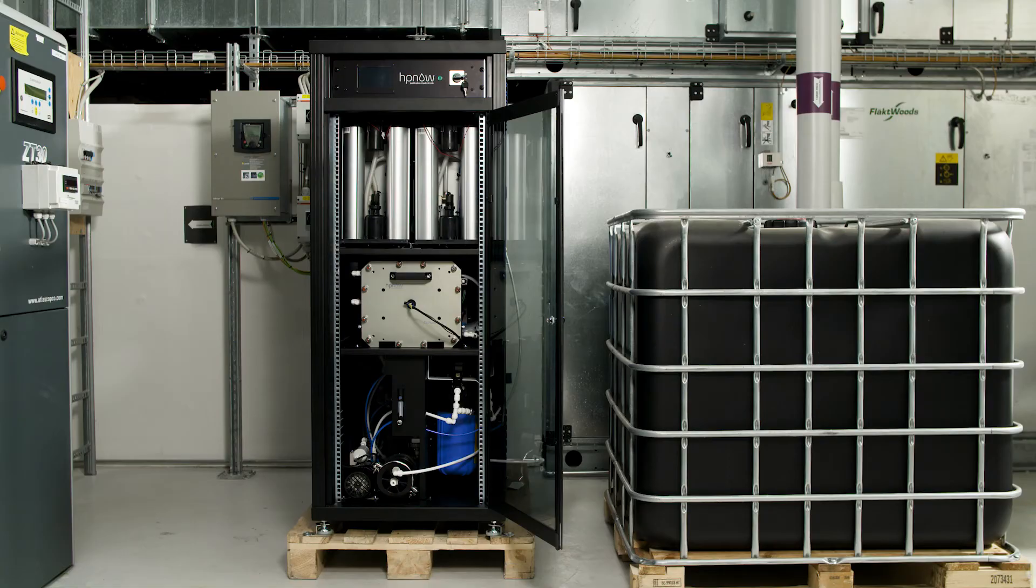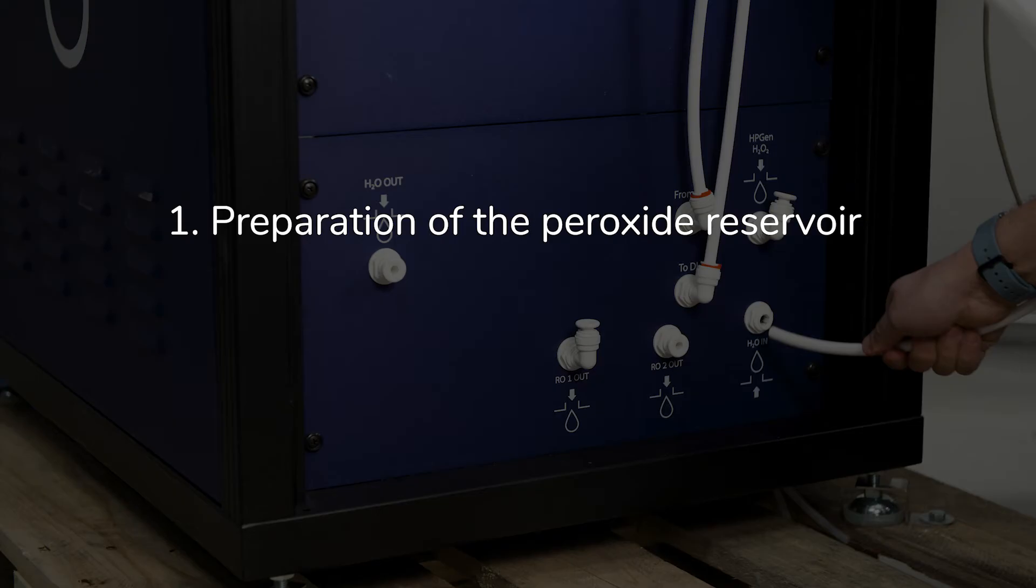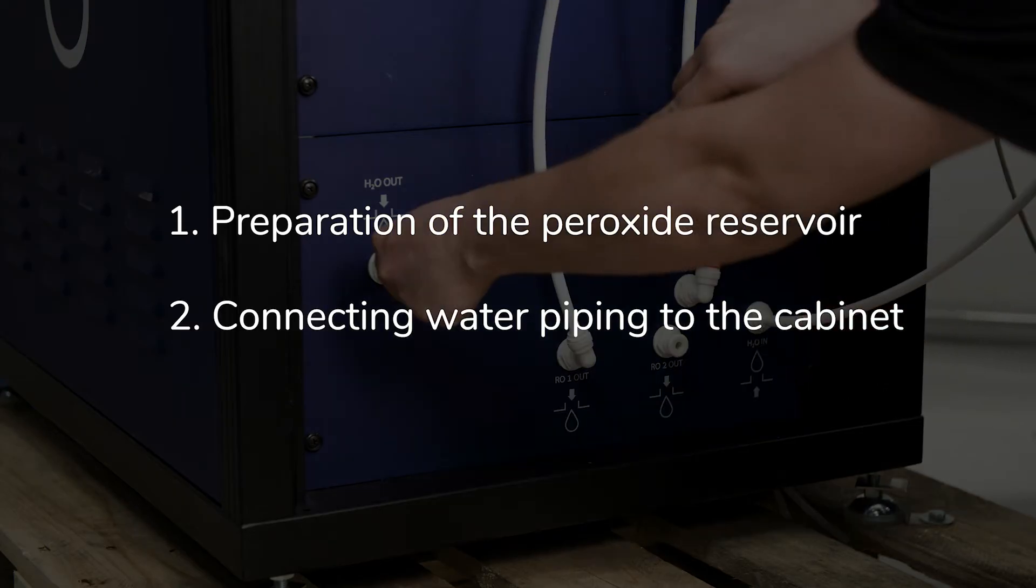Overall, there are two simple tasks in the installation of an HP Gen system. 1. Preparation of the peroxide reservoir. 2. Connecting water piping to the cabinet.